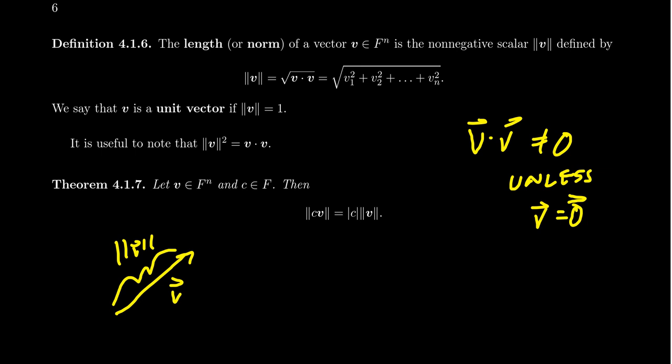If a vector's norm happens to be 1, we call it a unit vector — it's a vector of length 1. Unit vectors will be very important for us. Also, a useful identity we use all the time: if you take a vector dotted with itself, this equals the square of its norm. That's just taking the norm equation and squaring both sides.